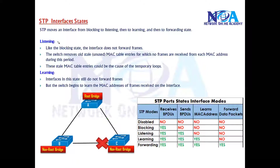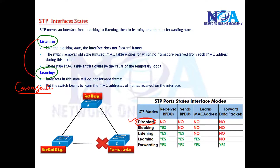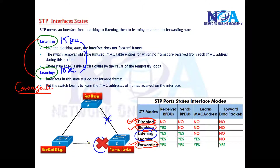There are two more states: listening and learning. These occur during convergence time, so they are not permanent. A blocking or disabled port can persist for a long time, but listening and learning states last for a specific time period — 15 seconds each. This happens at convergence time when you connect a new link, or when a main forwarding link fails and the port is converging from blocking to forwarding.